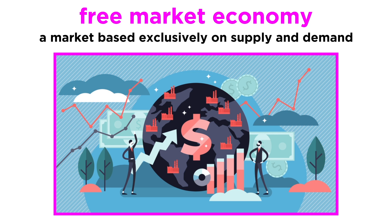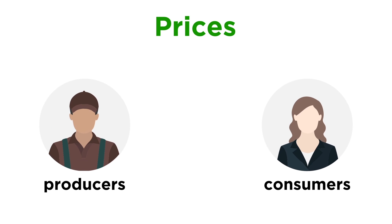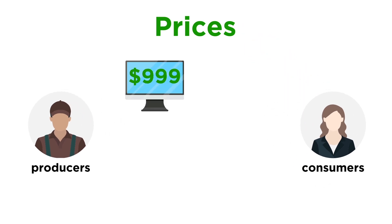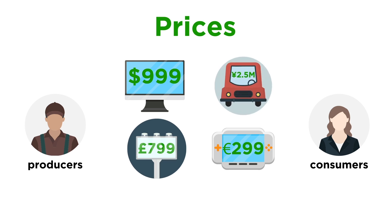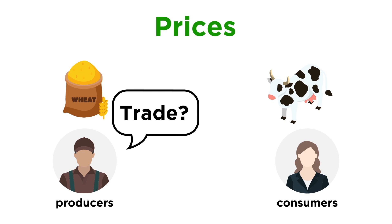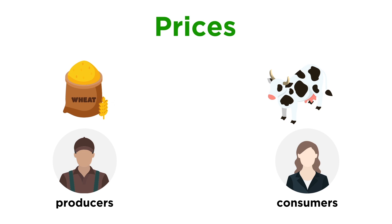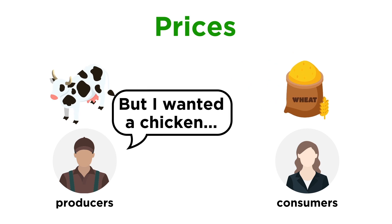In a free market economy, one which is based exclusively on supply and demand rather than any kind of government control, prices offer advantages to both consumers and producers. Prices are an efficient way to allocate or distribute resources. Prices also work as a language, an incentive, and a signal of economic conditions. Without prices in the context of a common currency, a seller would have to barter, which means exchanging one type of good or service for another. And of course, bartering is not an efficient or convenient way for markets to work.